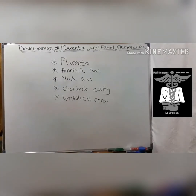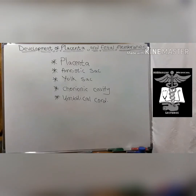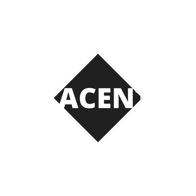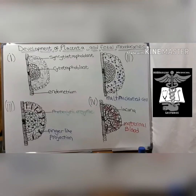In this video we are going to be looking at the embryonic development of the placenta and other fetal membranes, which are the amniotic sac, the yolk sac, the chorionic cavity, and the umbilical cord. These structures are derived from the blastocyst, which protect, support, and nourish the embryo and the fetus.